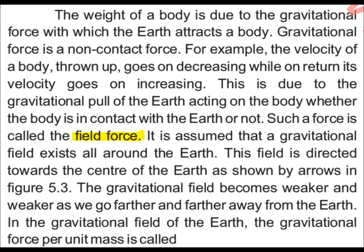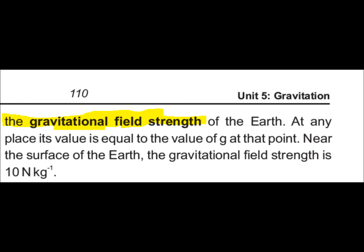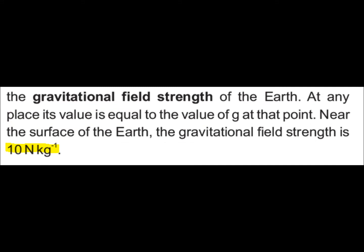The gravitational force per unit mass is called the gravitational field strength of the Earth. So the definition is: gravitational force per unit mass is called gravitational field strength. Its value is equal to the value of g at that point — that is 6.673 × 10⁻¹¹. Near the surface of the Earth, the gravitational field strength is 10 N/kg. The value of field strength is similar to the value of g.